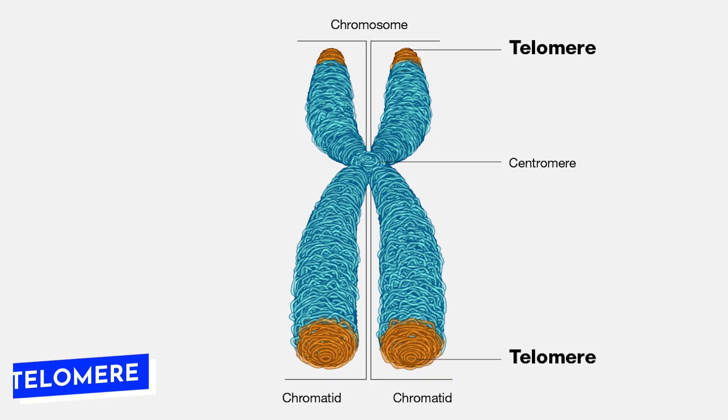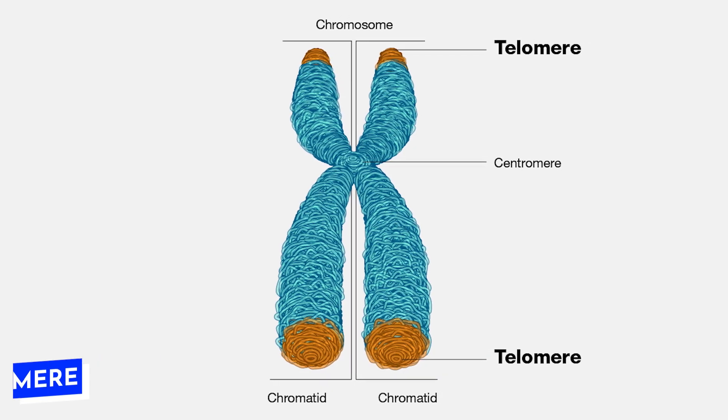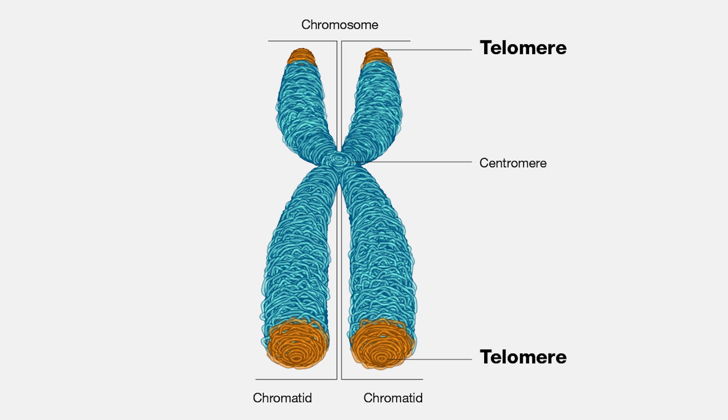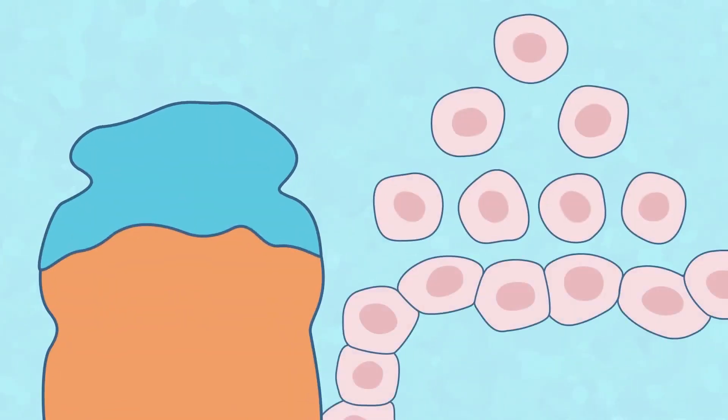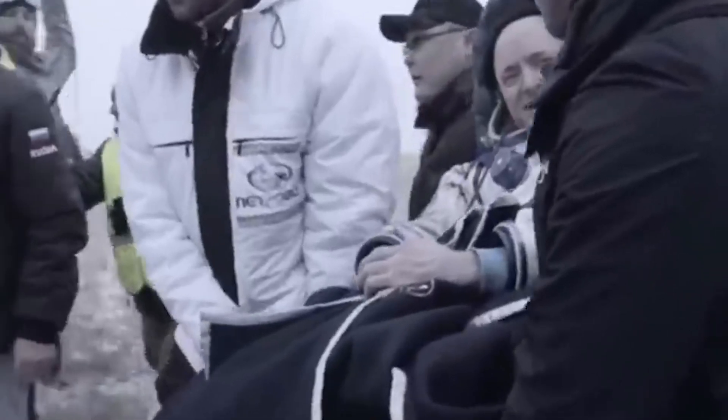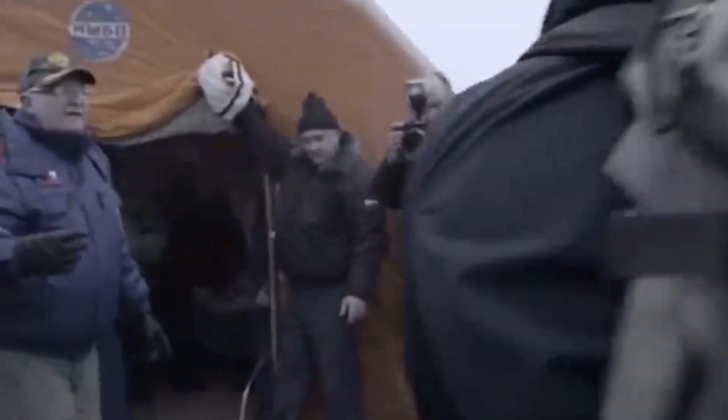When he left Earth, he looked like his twin brother. But upon returning, he was a bit taller and no longer looked like his twin brother. Actually, Scott's telomeres, which are part of our chromosomes, actually grew longer in space, a contrast to the usual shortening with age. However, they quickly shortened upon his return to Earth.